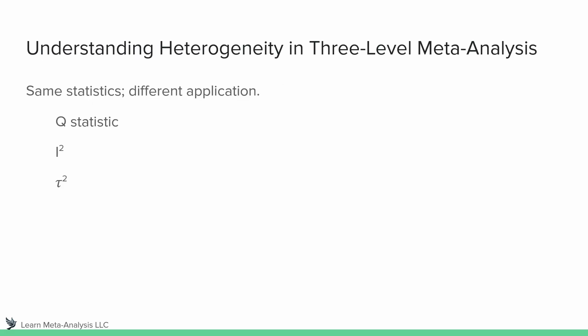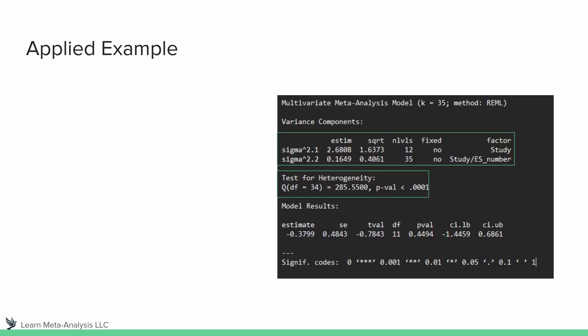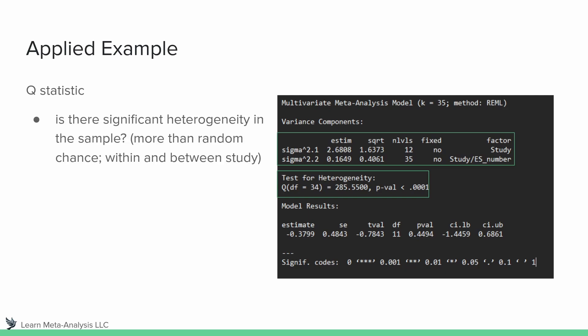Now let's think about this in relation to a three-level meta-analysis. We're going to have the same statistics, but with a slightly different application because we have one additional level in our model. Here are the results from metaphor for a three-level meta-analysis. We still have our test for heterogeneity — the Q statistic — but above that we have sigma 2.1 and sigma 2.2, which are estimates of tau-squared. The Q statistic p-value is 0.001, which means there is significant heterogeneity within our sample.